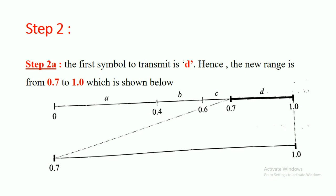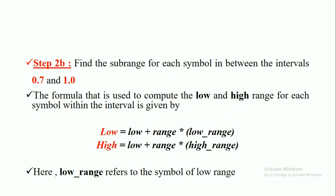Next, step 2. In step 2A, the first symbol to transmit is D because in the word DAD, the first symbol is D. Hence, the new range is from 0.7 to 1.0, which is shown below. The first symbol we transmit is D, so the new range is given as 0.7 to 1.0.